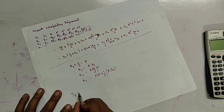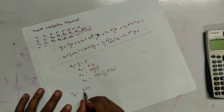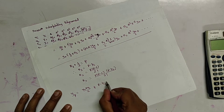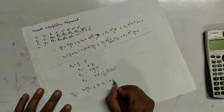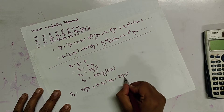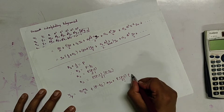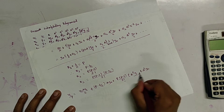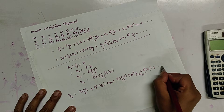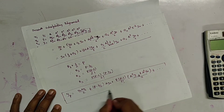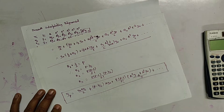yp equals (y-naught plus y1) over 2, plus (p minus 1/2) del y-naught, plus p(p-1) over 2-factorial times (del-squared y-minus-1 plus del-squared y-naught) over 2, plus dot dot dot, which is the required Bessel interpolating polynomial.